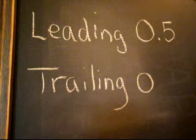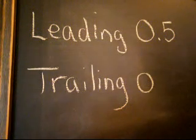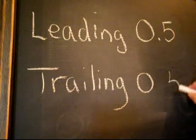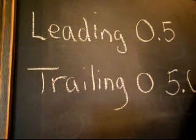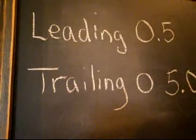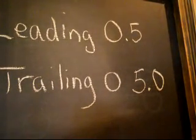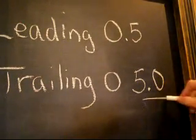A trailing zero is anything, as you may surmise, is anything that comes after a decimal point, so 5.0. Oop, here we go, 5.0, ha! So that's a trailing zero.